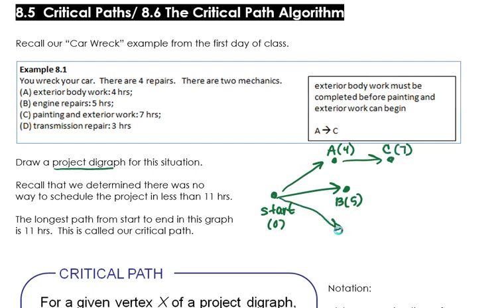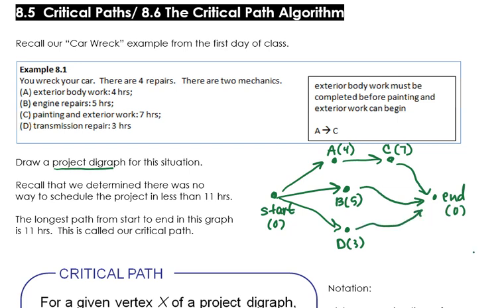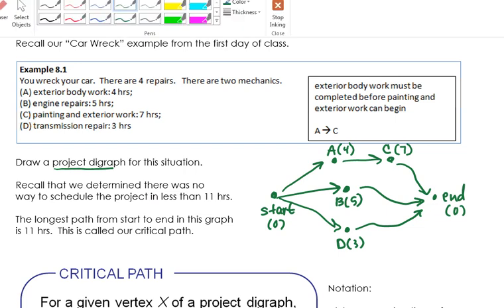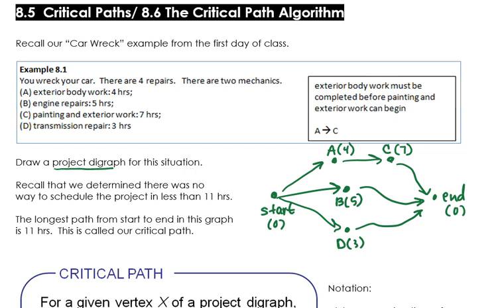I could also start task D right away as well, and that was three hours. Once I get to the end of these strains, I don't have anything else to arrow over to. Here's my project digraph. We want to determine a way to schedule this. We determined we couldn't do anything in less than 11 hours. The reason why was because of this path up here. A has to be done before C. A is going to take us four hours, and C is going to take us seven hours. So no matter what we do, this project is going to take us 11 hours no matter how many people we work on it.